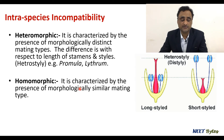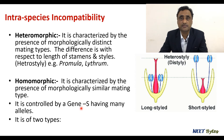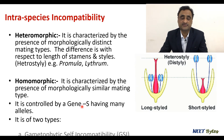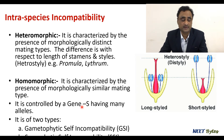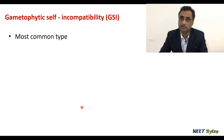In the case of homomorphic incompatibility, it is characterized by the presence of the same morphological mating type. It is further divided into two types: gametophytic self-incompatibility and sporophytic self-incompatibility. It is actually controlled by a gene S, which has many alleles — that is, it is controlled by multiple alleles.